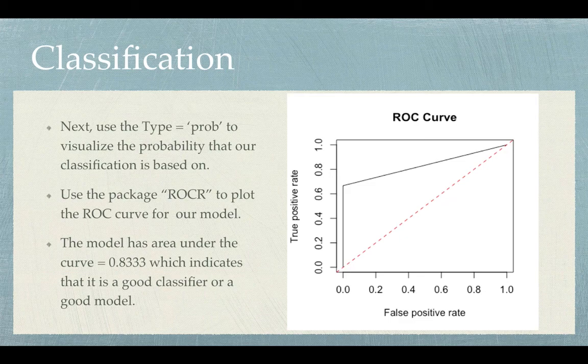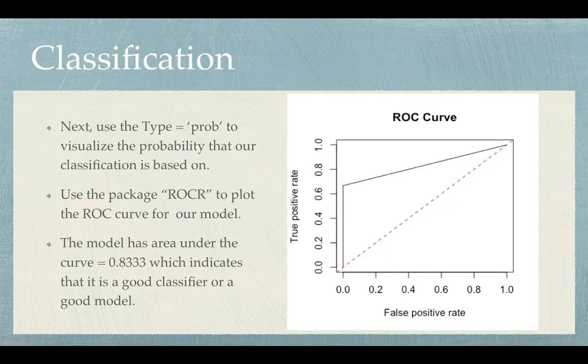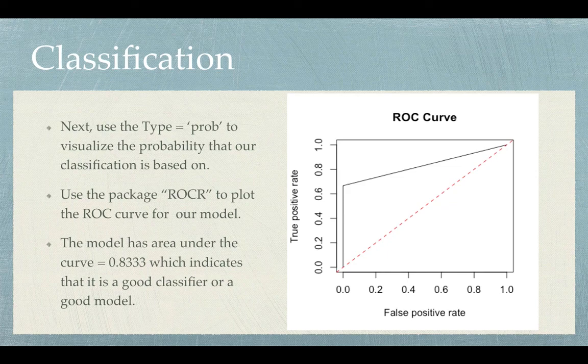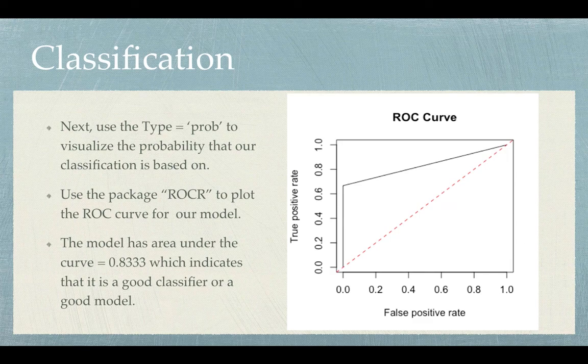Next, we used the type equal to probability to visualize the probability that our classification is based on. We used the package ROCR to plot the ROC curve for our model. As you can see on the right is our model, which has the area under the curve equal to 0.8333, which indicates that it is a good classifier or a good model.